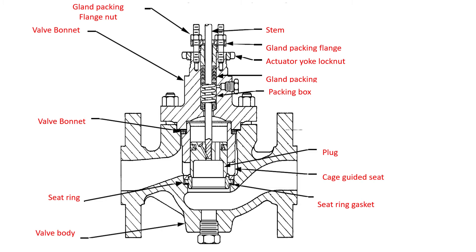This is the actuator yoke lock nut, which is used to mount the actuator with the valve body. Finally there is a stem, which is connected to the actuator diaphragm spring. This covers the full description of the control valve.